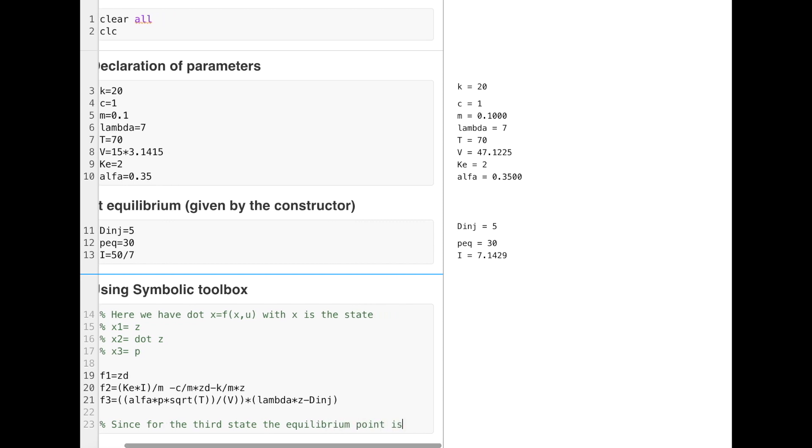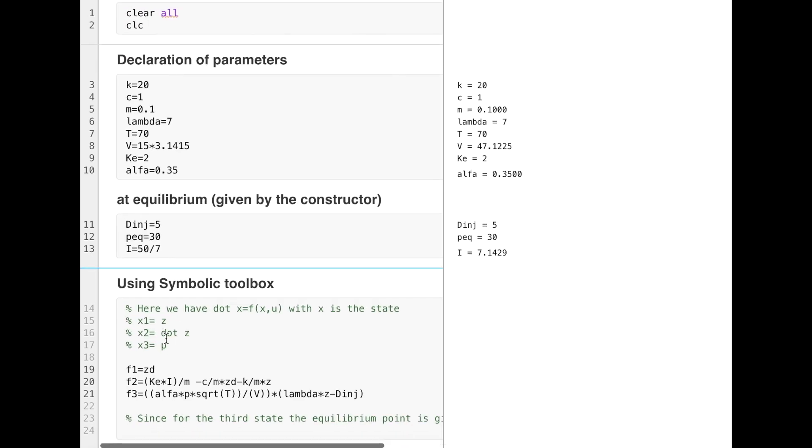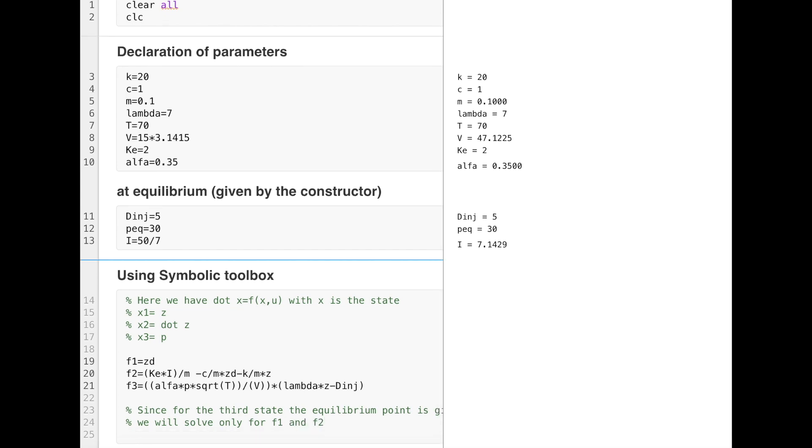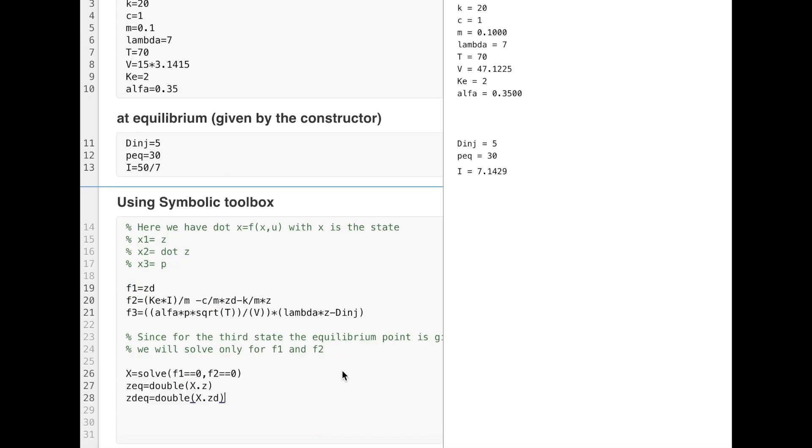Now I copy the expression that I developed previously. Because the third state is p and we know that the equilibrium point is given as p equals 30, we will not use f3, only we will solve for f1 and f2. I will use the solve function here. To use symbolic toolbox, we have to use the keyword syms for z, zd, and p. Now we have the z_equilibrium equals 0.714.